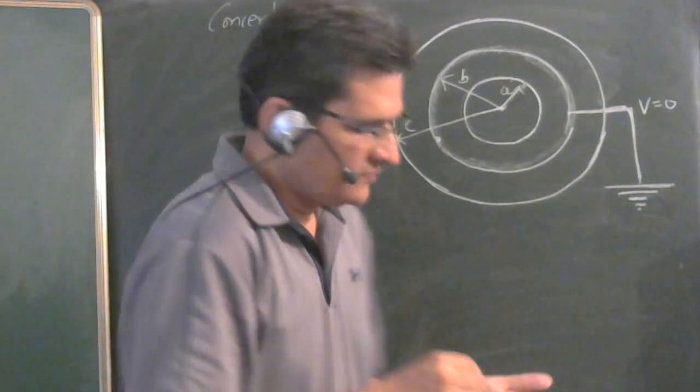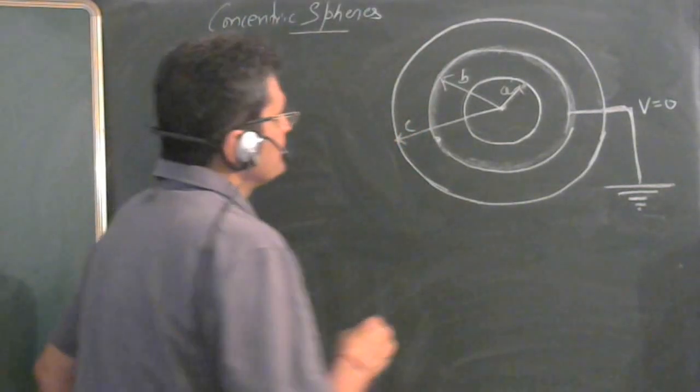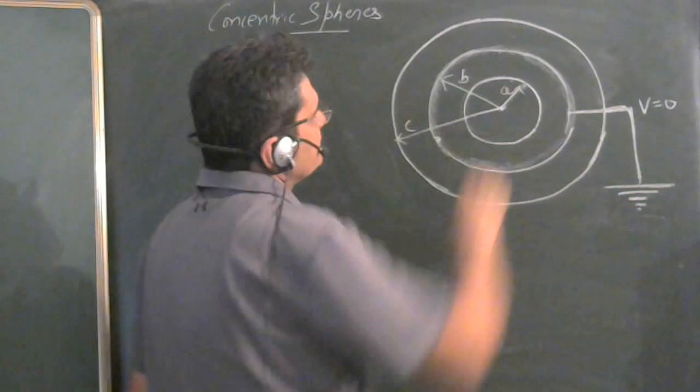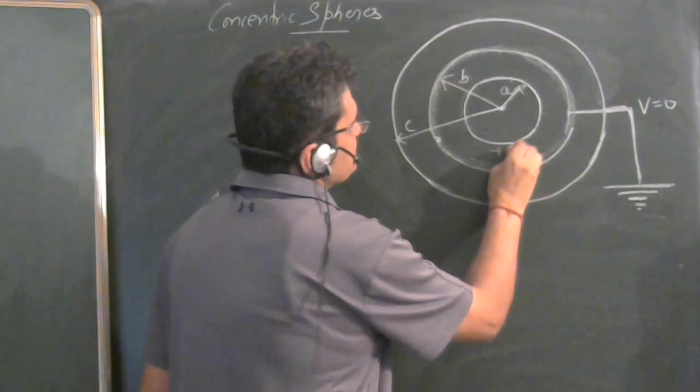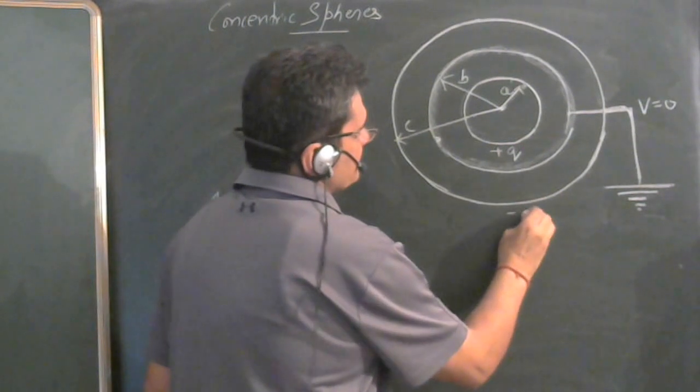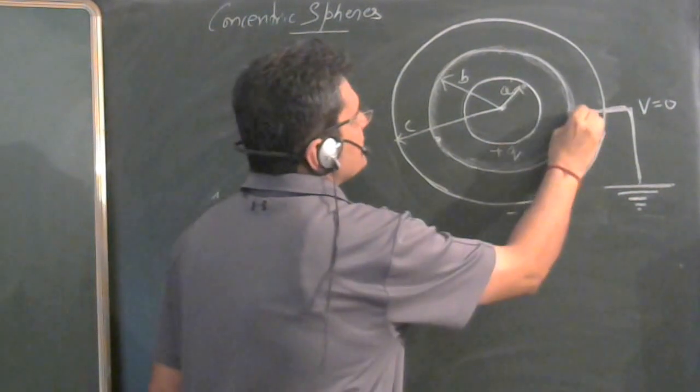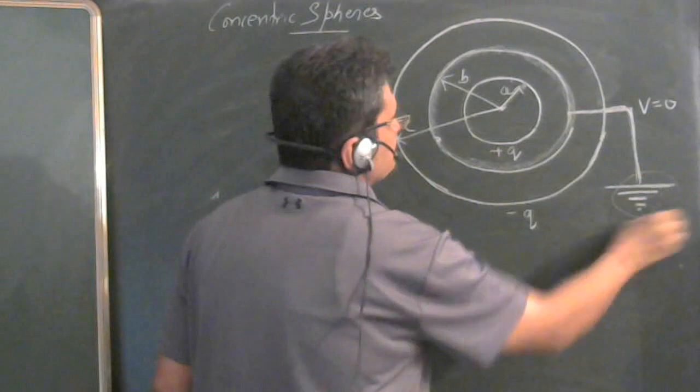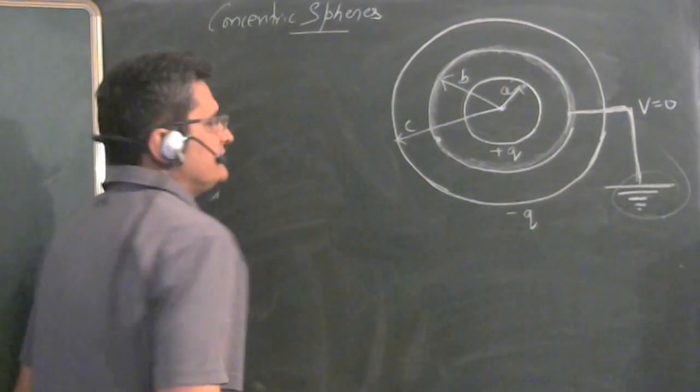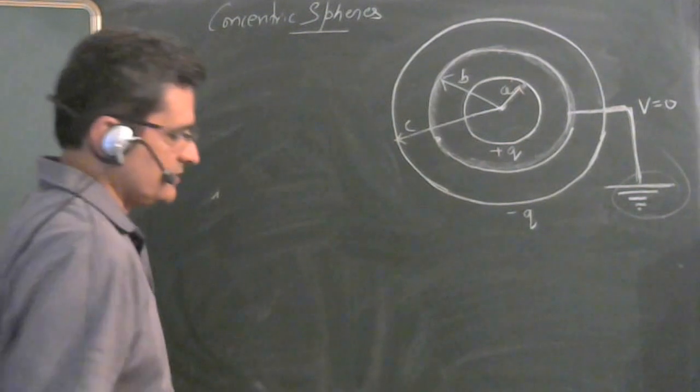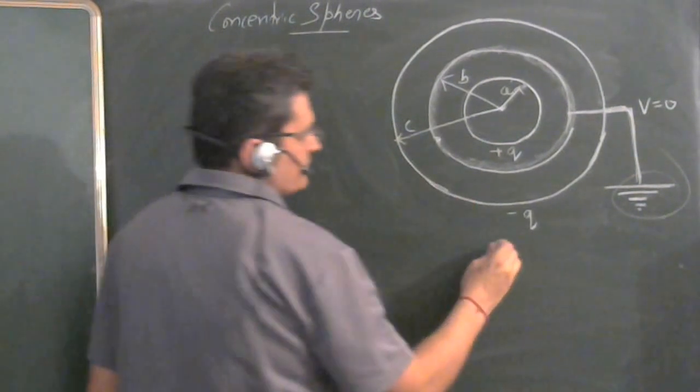We will solve the problem on the charge distribution when there are three concentric spheres. The inner sphere is given plus Q charge, the outer is given minus Q, and the middle sphere is earthed. We have to find what will be the charge distribution on these spheres after this arrangement. So for solving such problems, three points.